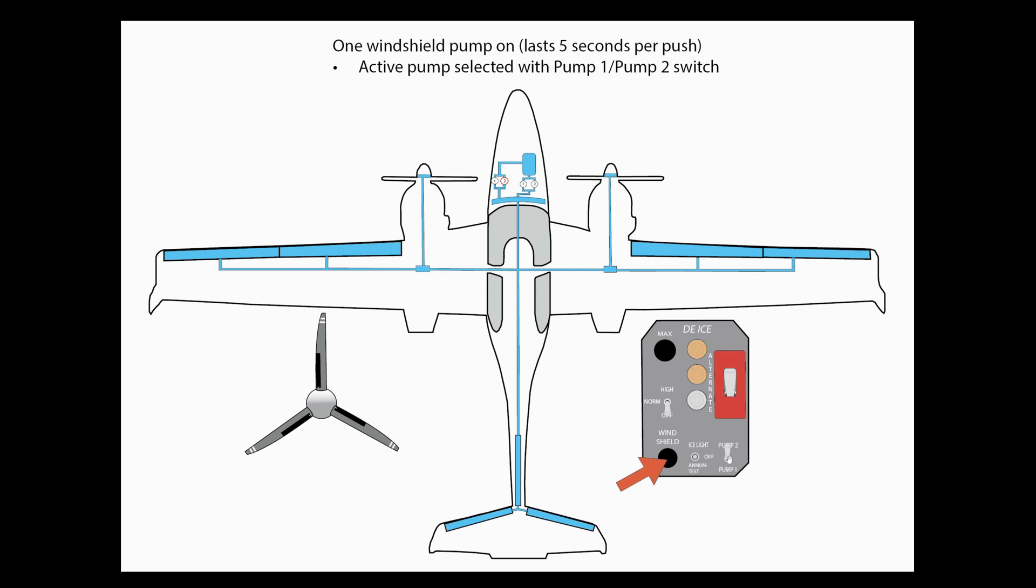That was also used to select the active pump when you have the high setting on the airframe and prop de-ice system. It also applies to the windshield system. So in this case, pump two is selected. I push the windshield button and for five seconds, pump two activates and pumps de-ice fluid into this bar right here to spray on the windshield.